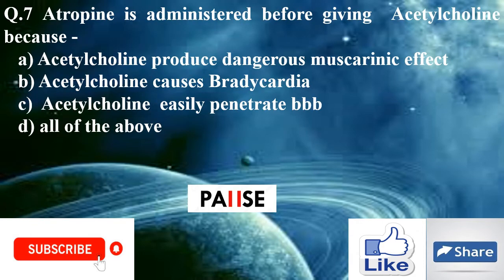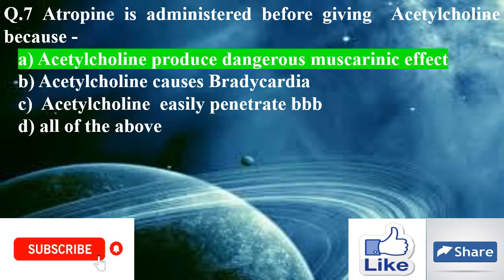Question seven: Atropine is administered before giving acetylcholine because — option A: acetylcholine produces dangerous muscarinic effects, option B: acetylcholine causes bradycardia, option C: acetylcholine easily penetrates the blood-brain barrier, option D: all of the above. The right answer is option A: acetylcholine produces dangerous muscarinic effects.